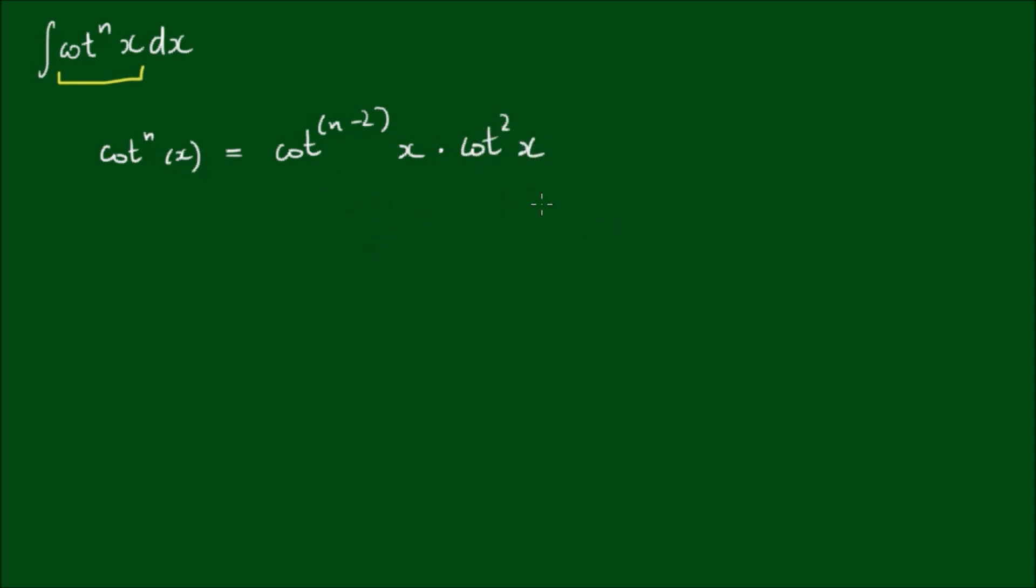If you're wondering how we got to this step, we simply use the index law that a to the power of b by a to the power of c can be written as a to the power of b plus c. So if we combine these back together, we get exactly what we started with on the left hand side.